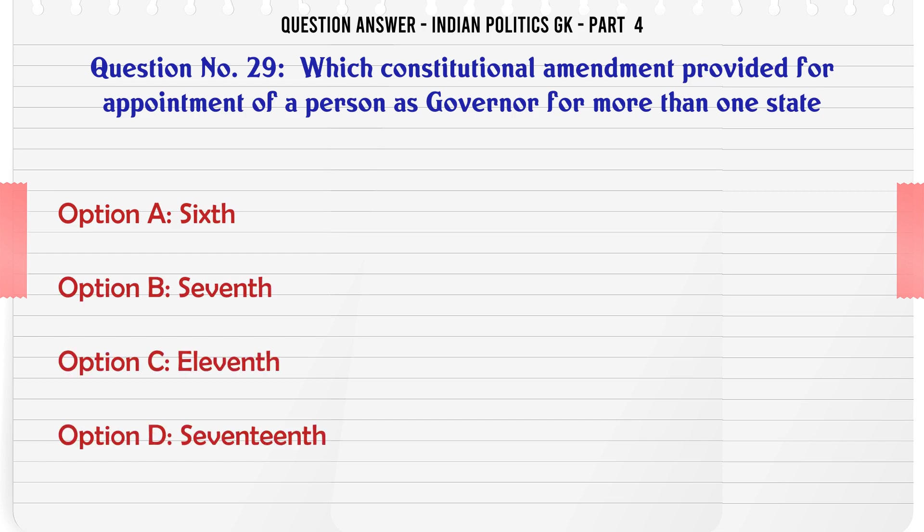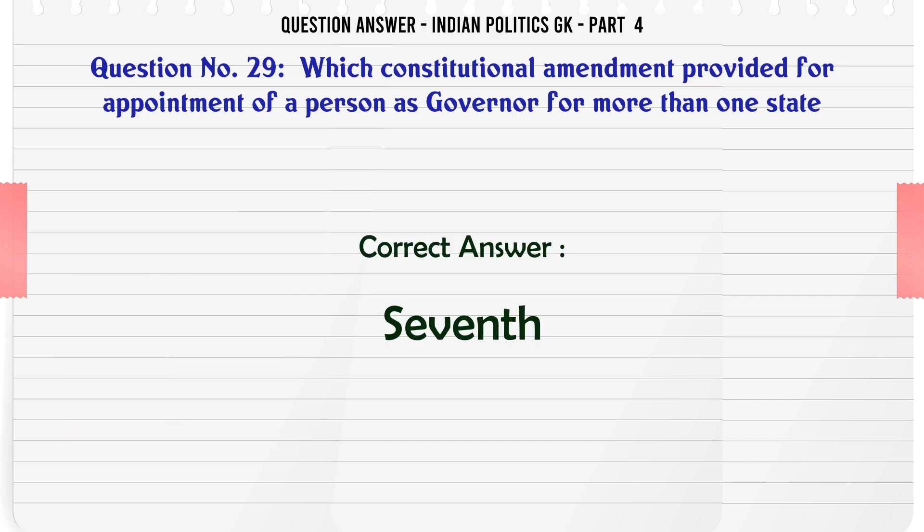Which constitutional amendment provided for the appointment of a person as Governor for more than one state? A. Sixth. B. Seventh. C. Eleventh. D. Seventeenth. The correct answer is Seventh.